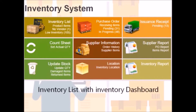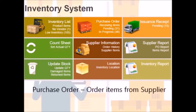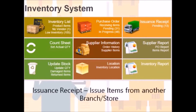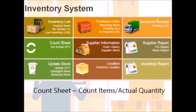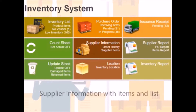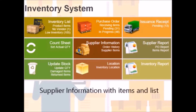The inventory list comes with the inventory dashboard. This is where we manage our item details. Purchase order keeps track of items ordered from the suppliers. Issuance receipts keep track of items transferred from another branch or store. Count sheet is used for recording physical counts and actual quantity.